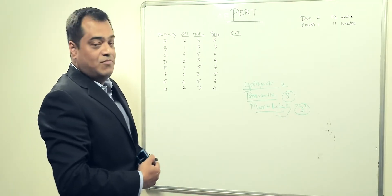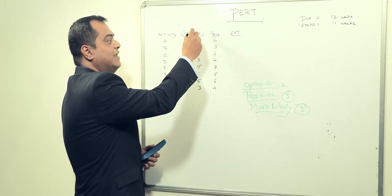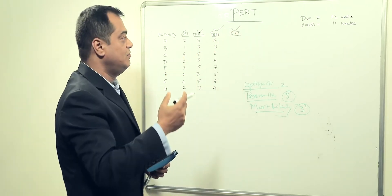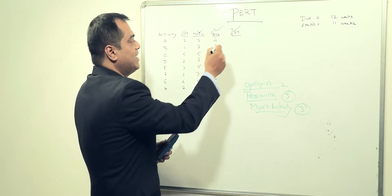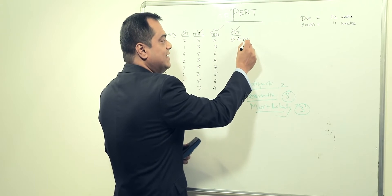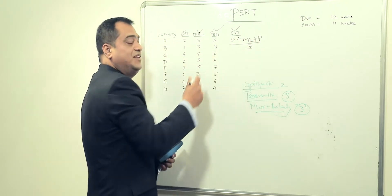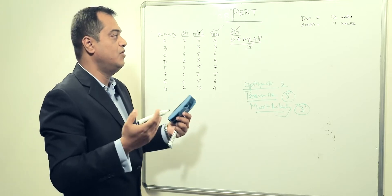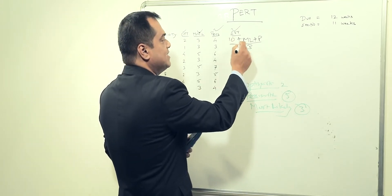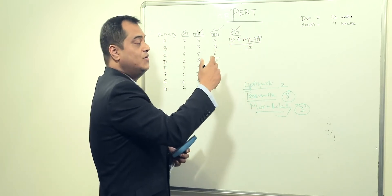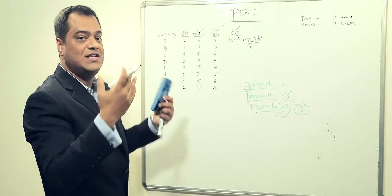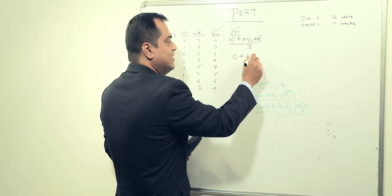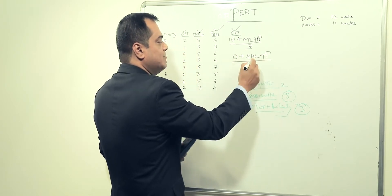To come up with an estimated time, we take the optimistic, most likely, and pessimistic values. Normally we'd divide by three, but in PERT the formula weights most likely more heavily. The formula is: optimistic plus four times most likely plus pessimistic, all divided by six. Most likely is doubled up because that's what's most likely to happen.